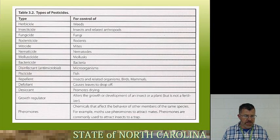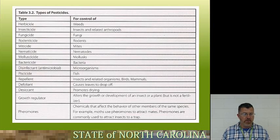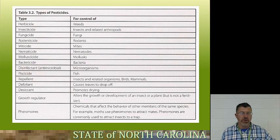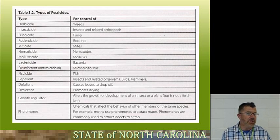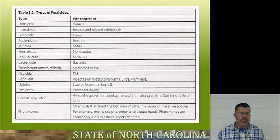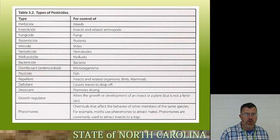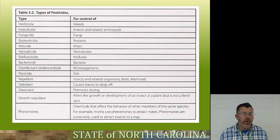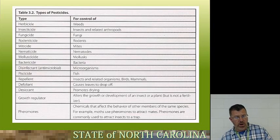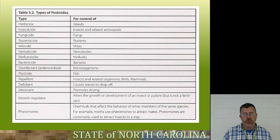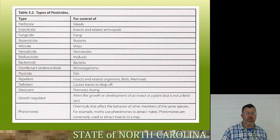Bactericide is for bacteria. Disinfectants or antimicrobials are used for microorganisms. Piscicide is for fish — and there are other pesticides that will kill fish and are very harmful to aquatic life that you wouldn't even think about. So read the label anytime you might be applying a pesticide near water where there's a chance for runoff into a lake or stream.